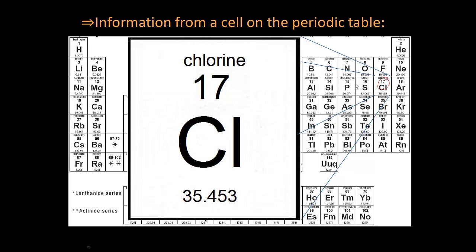So chlorine is this element over here. And if we take a look and we zoom in on chlorine, there's a lot of information in this box. The very first piece of information we get is the name. This name is the element name. And it actually is not universal. If you go to a different country where they speak a different language, they're going to have different names.